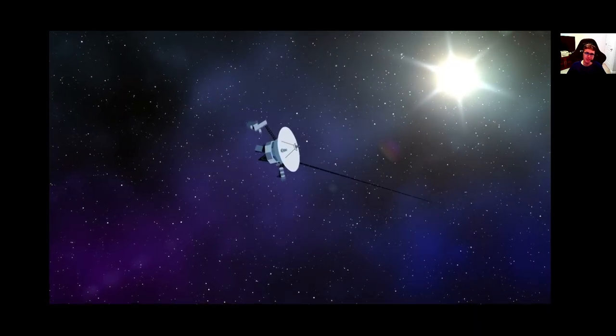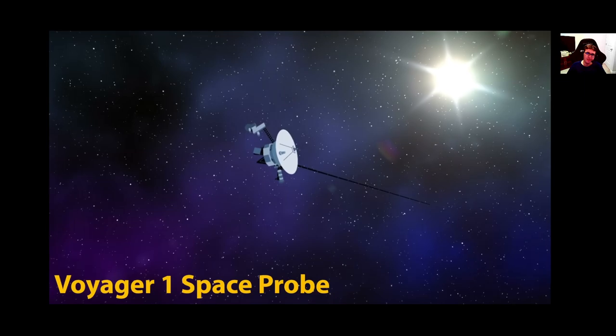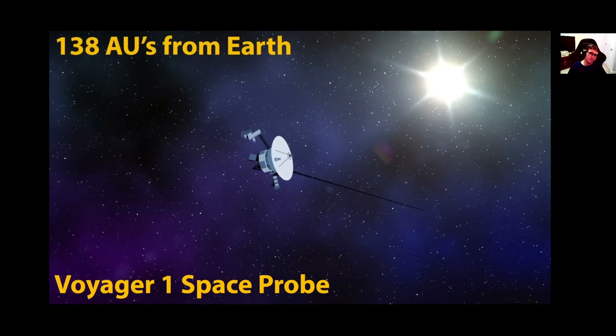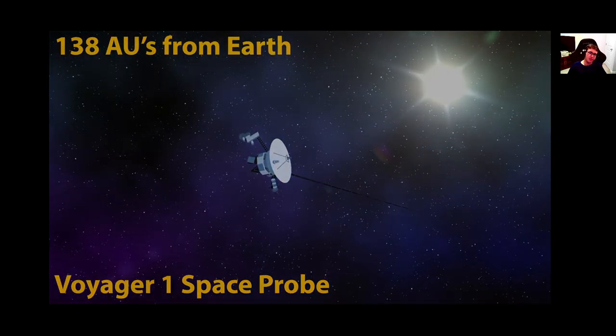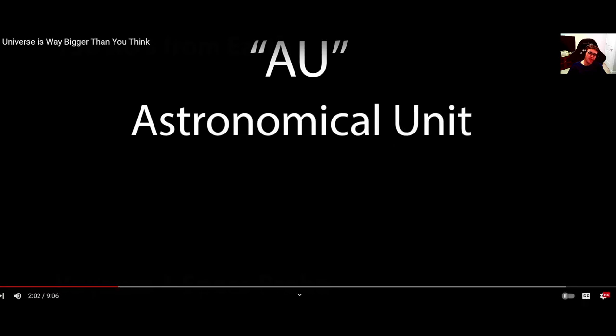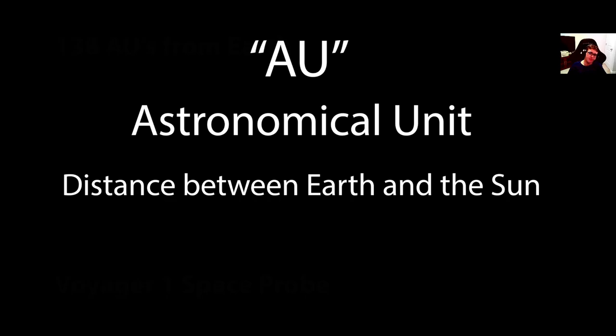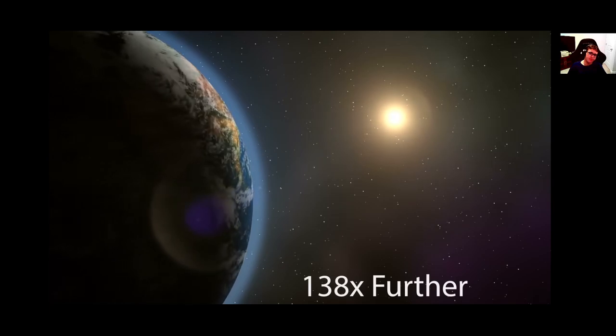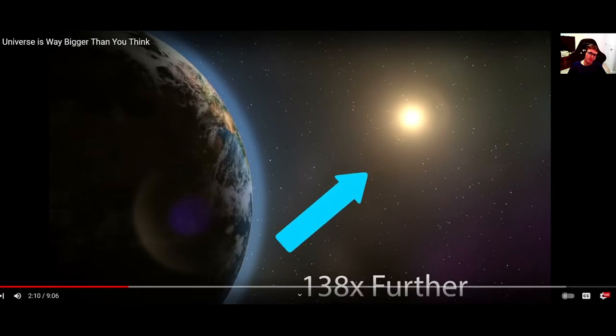When we zoom out even further away, we can find the Voyager 1 space probe, which is the furthest away man-made object from Earth. It is currently located 138 AUs from the Earth. That's really far away from... AU meaning astronomical... That's really far away from Earth, by the way. Unit, which is the distance between the Earth and the Sun, which means that Voyager 1 is 138 times further away from us than the Sun is.